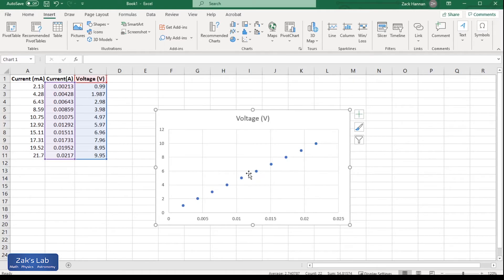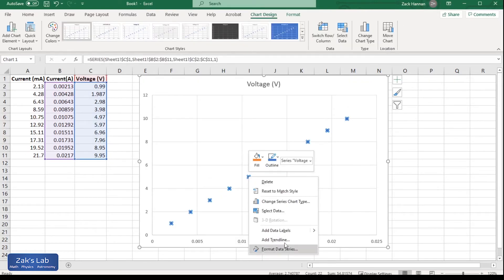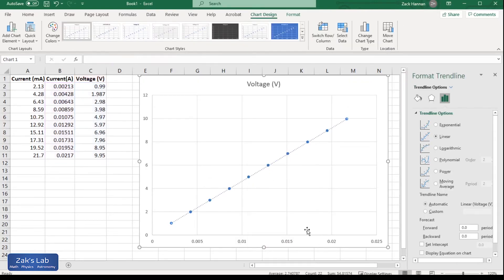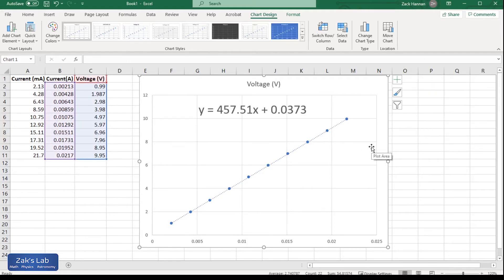Now to get a best fit line on this, you right-click one of the data points, click add trendline, then click display equation on chart. And I just bumped up the font size to make this more visible in the video.